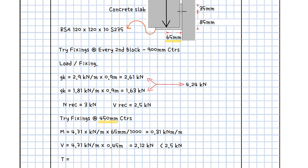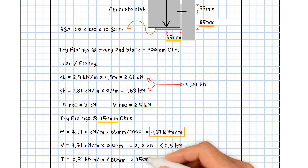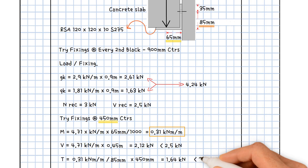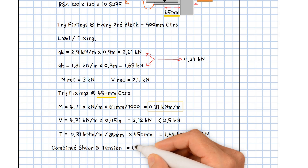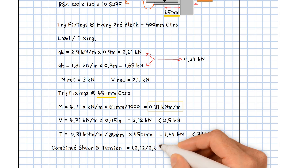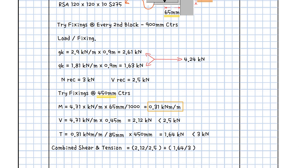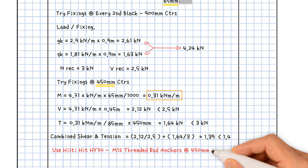The tension force on the anchor is then calculated by dividing the bending moment due to eccentricity, 0.31 kNm per metre, by the distance from the bearing point of the angle to the bolt centreline, 85 mm, multiplied by the anchor spacing, 450 mm. This gives a value of 1.64 kN, which is less than 3 kN. Finally, we check the combined shear and tension: shear force on anchor 2.12 kN divided by 2.5 kN, plus 1.64 kN divided by 3 kN. This gives a value of 1.39, which is less than 1.4. As a result, using Hilti HIT HY70 with M12 threaded rod anchors at 450 mm centres is acceptable.